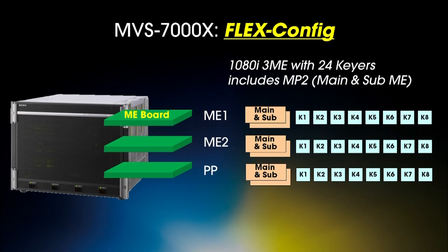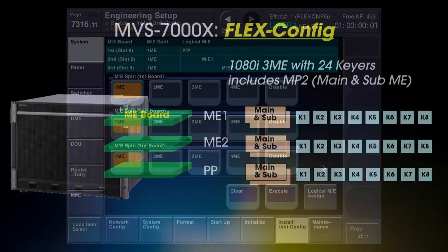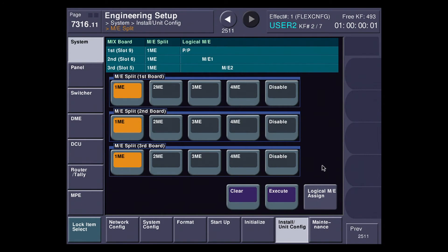You can see in this case I have three full MEs, each with eight keyers. I still get Multiprogram 2, which gives me my main and my sub in this mode. You can see on this menu here it's showing that each one of the physical boards has one ME.